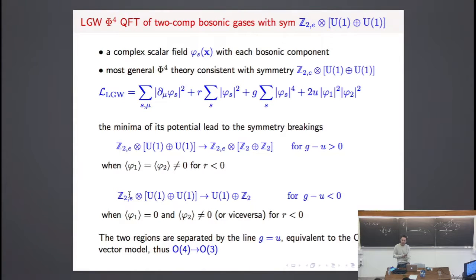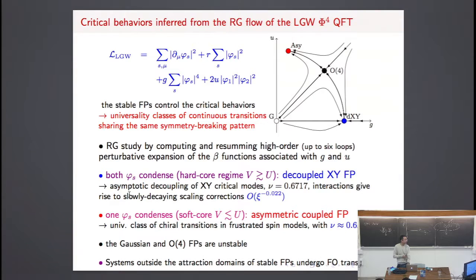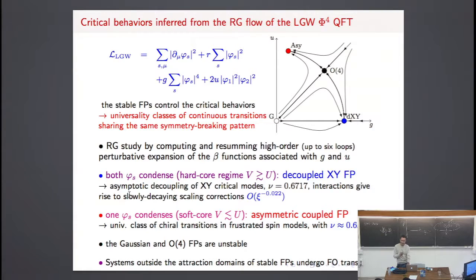The renormalization group analysis in the two quartic parameter space — looking for stable fixed points — shows after resummation that there are two stable fixed points: one called the coupled XY fixed point, and another stable fixed point. These two regions correspond to the two different symmetry breaking patterns.